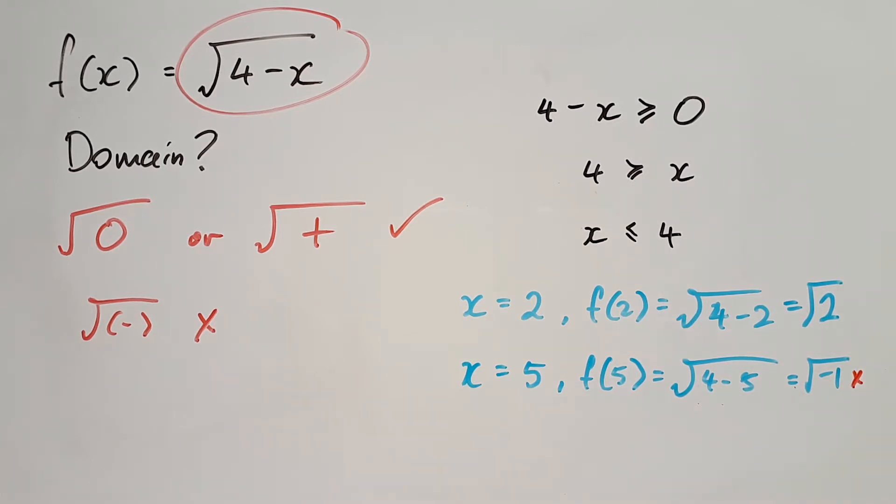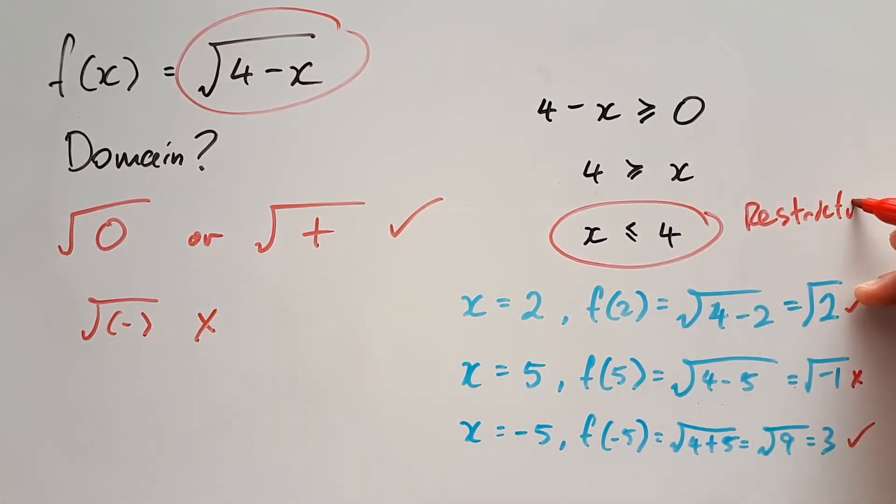But if we tried something much smaller and even negative, like x equals negative 5, f(-5) equals square root of 4 plus 5, which equals square root 9, which equals 3. So those two answers are valid, while the middle one is not, because that's greater than 4, so we've confirmed that our restriction is correct.